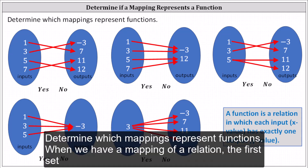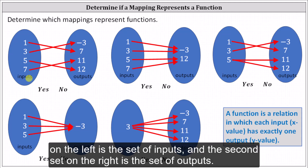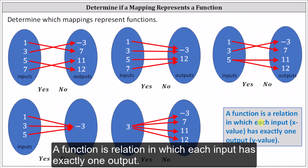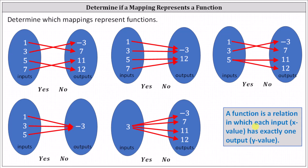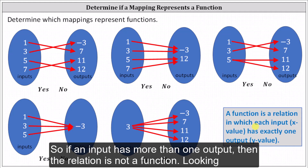Determine which mappings represent functions. When we have a mapping of a relation, the first set on the left is the set of inputs and the second set on the right is the set of outputs. A function is a relation in which each input has exactly one output. So if an input has more than one output, then the relation is not a function.